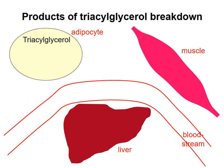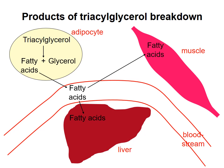I created this diagram to show the interrelationships between the different tissues involved. Triacylglycerols are stored in adipocytes. When blood glucose level drops, the hormone glucagon stimulates breakdown of triacylglycerols to fatty acids and glycerol. The fatty acids are released into the bloodstream, where they can be taken up by liver, muscle, and other tissues. Those tissues convert the fatty acids to acetyl-CoA, which can feed into the citric acid cycle to produce ATP. This is actually the way the liver obtains most of its ATP when blood glucose is low.